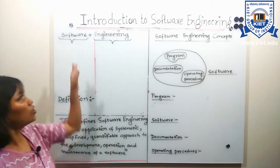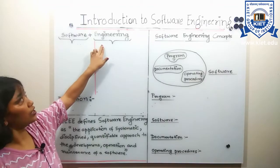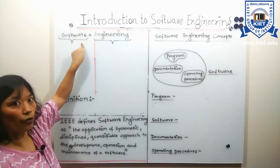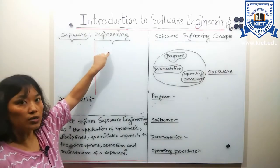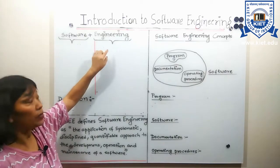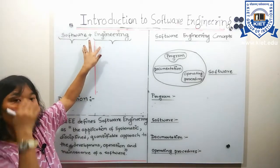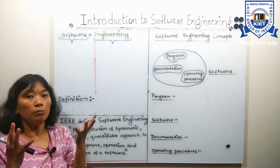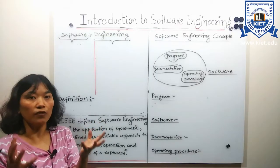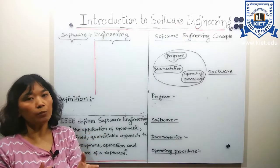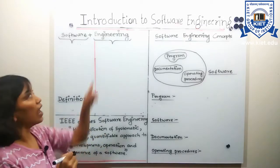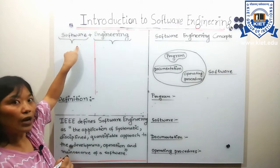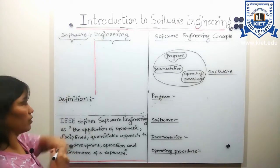Software engineering is composed of two terms: one is software and one is engineering. From these two terms, if we try to derive the meaning or definition, it is as simple as this — an engineering approach to develop a software.